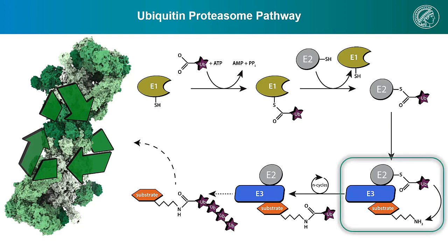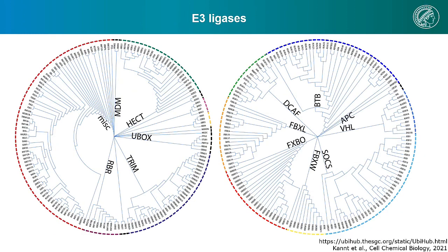There are many of these E3 ligase complexes known in humans — in fact, over 600 have been described so far. Here they are divided by simple, so single-subunit, on the left, and complex, so multi-subunit E3 ligases on the right, with some of the major classes annotated. Let me draw your special attention to the right picture of the complex E3 ligases.